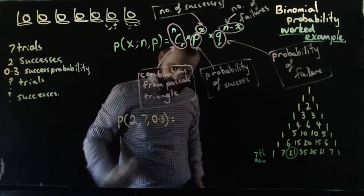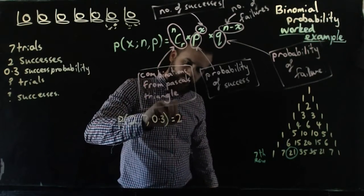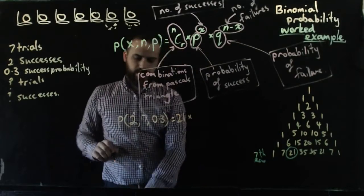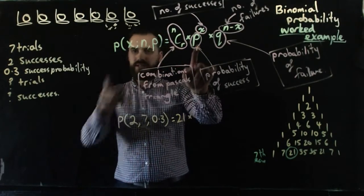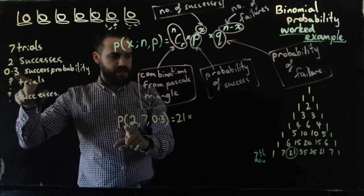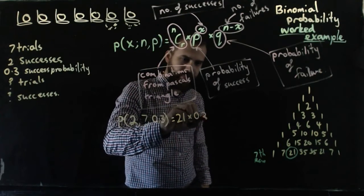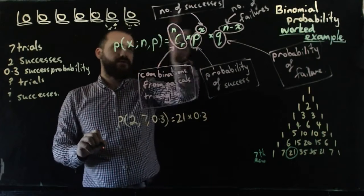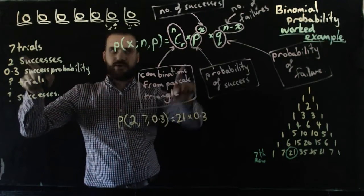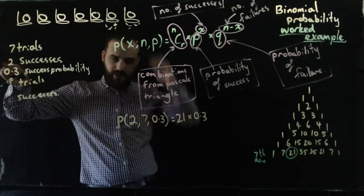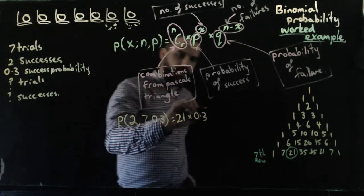Times the probability of success. The probability of succeeding in this game is 0.3 to the power of number of successes, to the power of number of successes we want to have succeed twice, to the power of two.